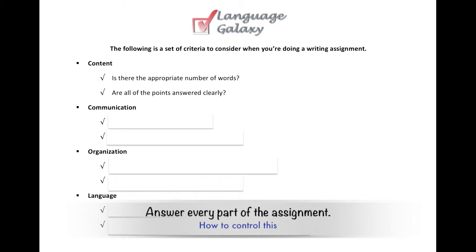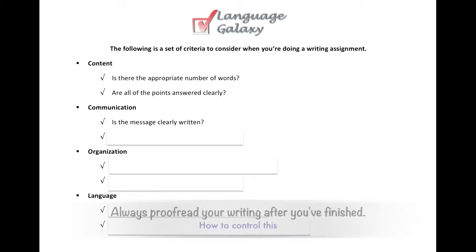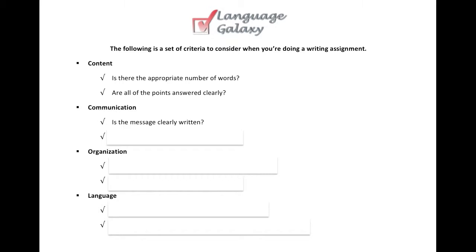Next, under communication: is the message clearly written? You should always proofread your writing after you've finished, and try to proofread it by reading it out loud. You'll catch any minor or silly errors that you didn't catch while writing. Even simple spelling mistakes — you'll be able to check those in your proofreading.